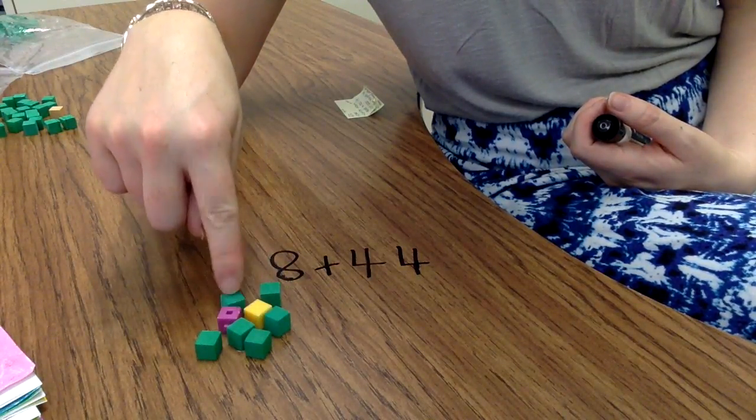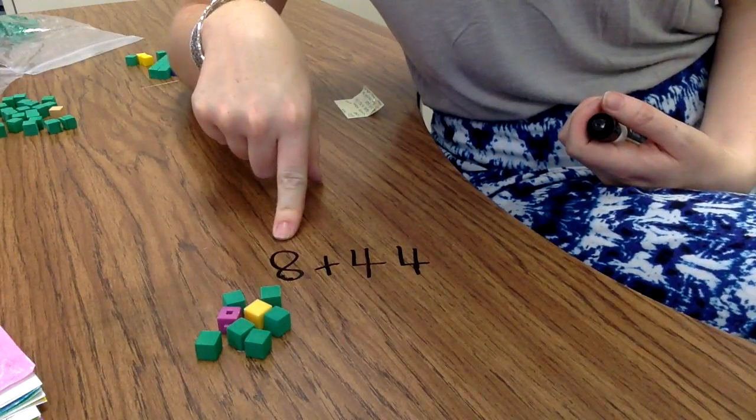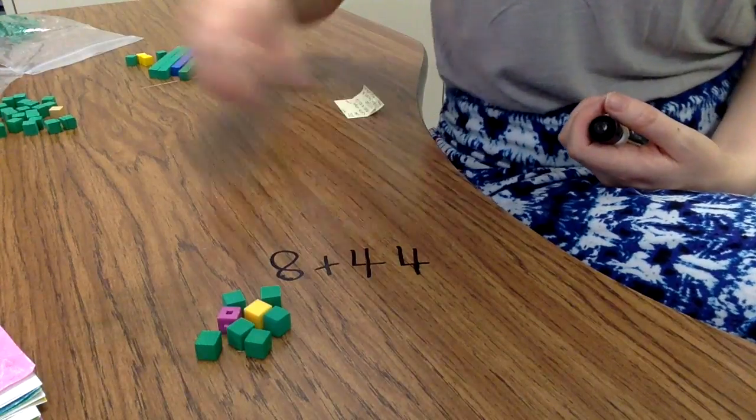There's 1, 2, 3, 4, 5, 6, 7, 8 little units. So now I've represented the first addend, 8 plus 44. Now I want to represent this addend 44.